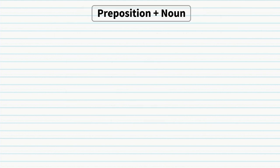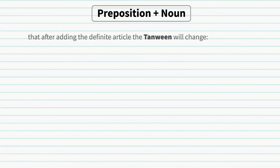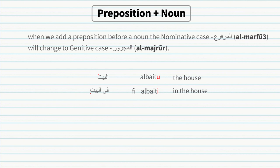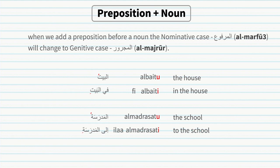After adding a definite article, the tanween changes — for example, baytun (a house) becomes al-baytu (the house); both are still in nominative case. But when a preposition is added before a noun, the nominative case changes to genitive case. For example, al-baytu (the house) becomes fi al-bayt (in the house) — notice the damma changes to a kasra. Another example: al-madrasa (the school) becomes ila al-madrasa (to the school). The word changes its state from nominative to genitive case.